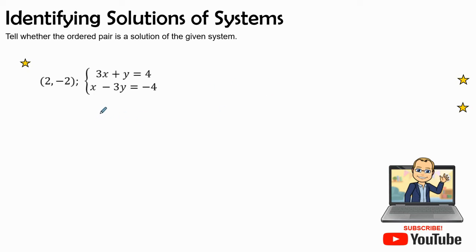So the first thing that we need to do is go ahead and rewrite the two equations that we see above us. I'm going to make a line just to separate these two equations. Then we have x minus 3y equals negative 4.